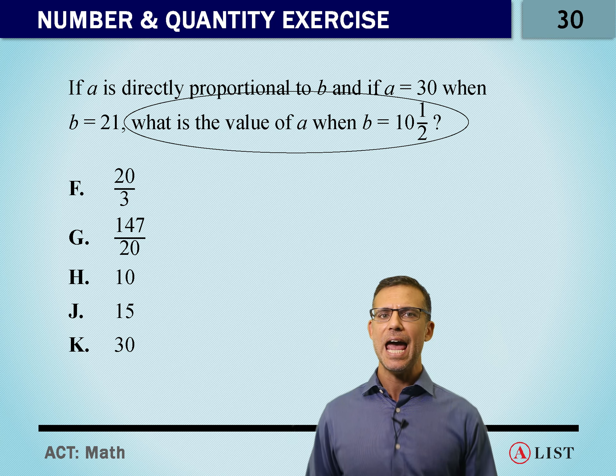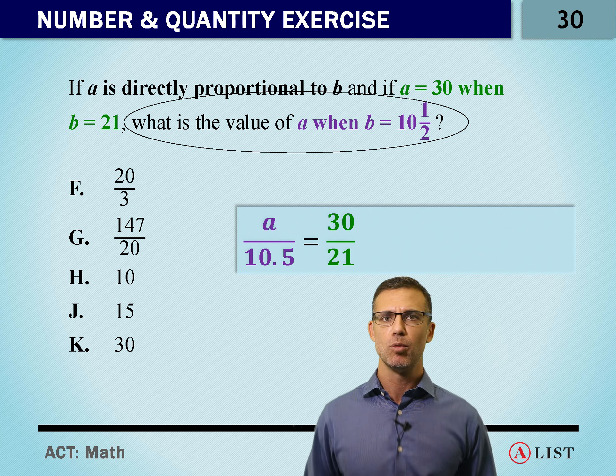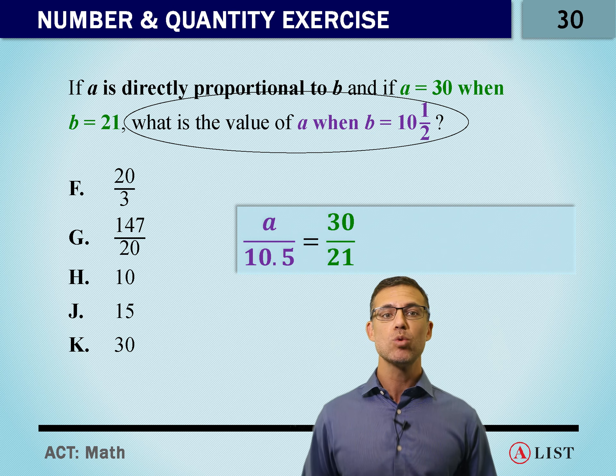Well, what they wanted is A over 10 and a half. Why? Because A is what we're looking for, and B is what we know.